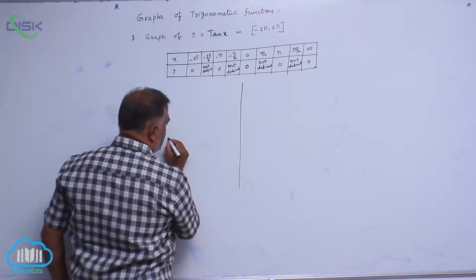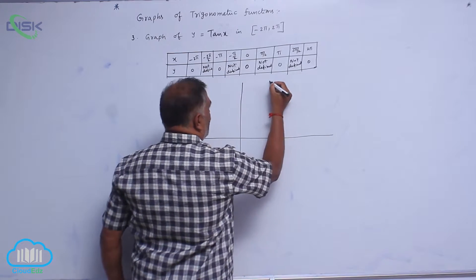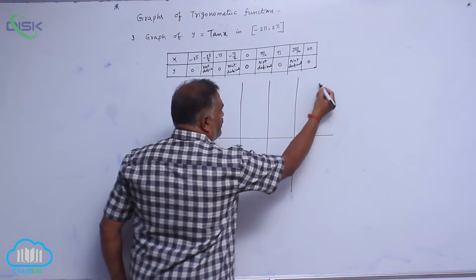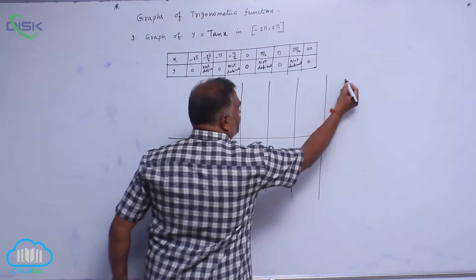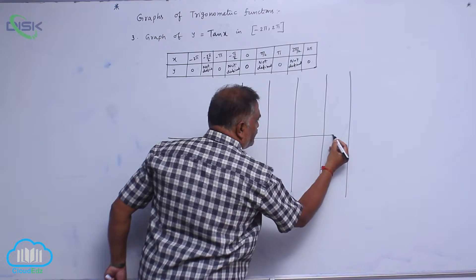if you draw the graph of tan x like this. Now, putting vertical lines comfortably like this.